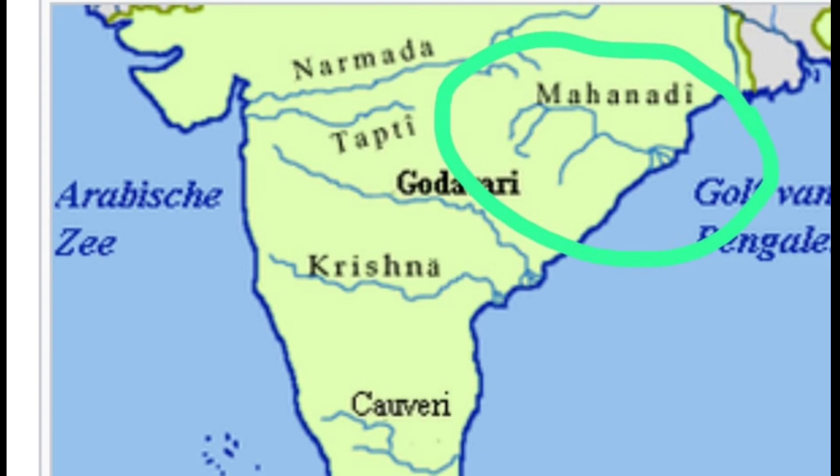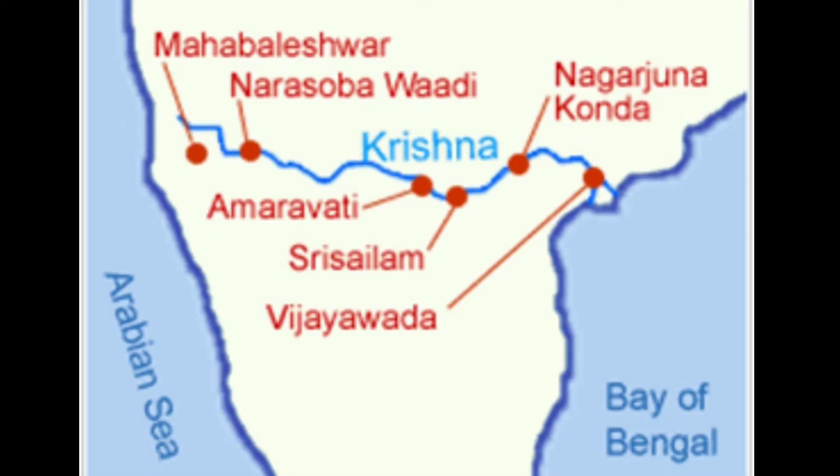Next is the Krishna Basin. The Krishna River originates from the Western Ghats and flows into the Bay of Bengal. Its length is about 1400 km. Its tributaries are Tungabhadra, Koyna, Ghataprabha, etc.